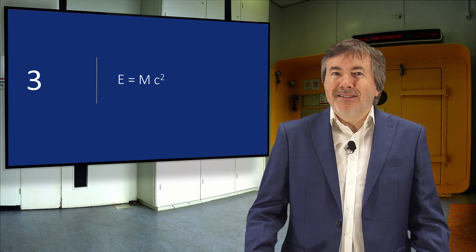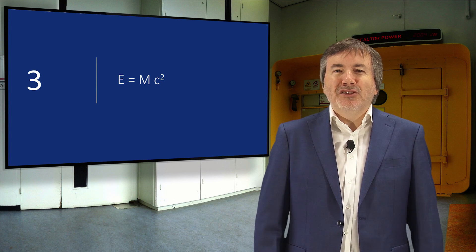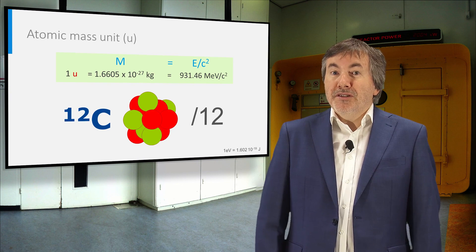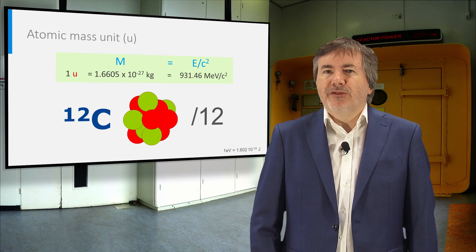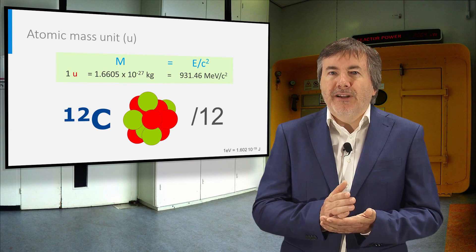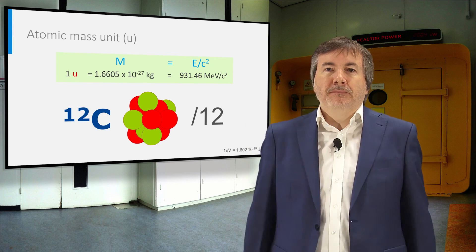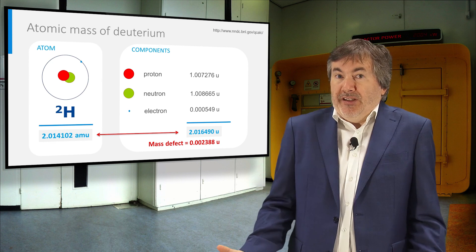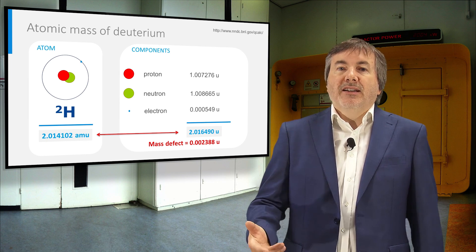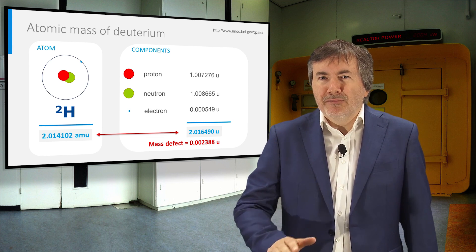Last but not least, let's see where nuclear energy comes from. It has to do with Einstein's formula relating mass with energy. First, we define a unit of mass for the atom, which is one twelfth of the mass of a carbon-12 atom — roughly the mass of one neutron or one proton. A deuterium atom has a mass of about two atomic mass units, because it has one neutron and one proton. The mass of an electron is two thousand times smaller.